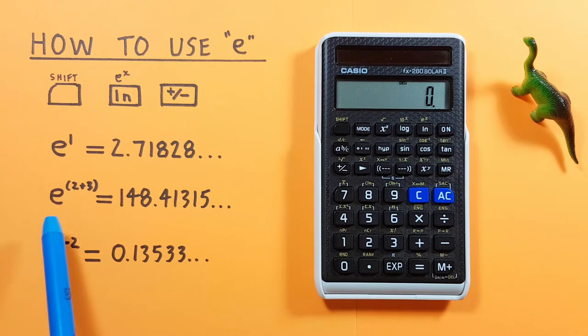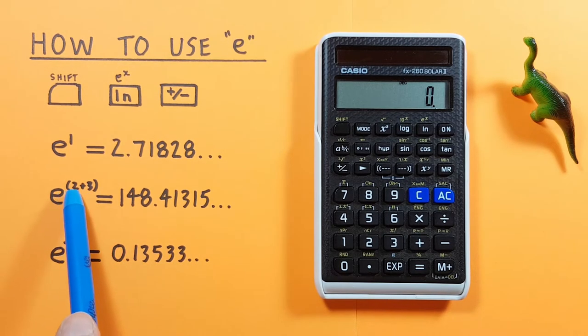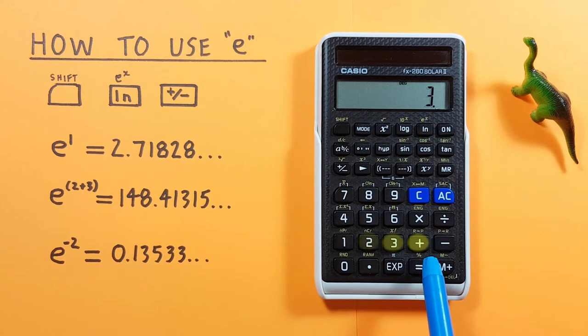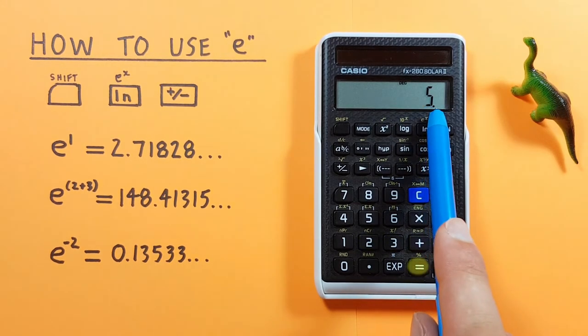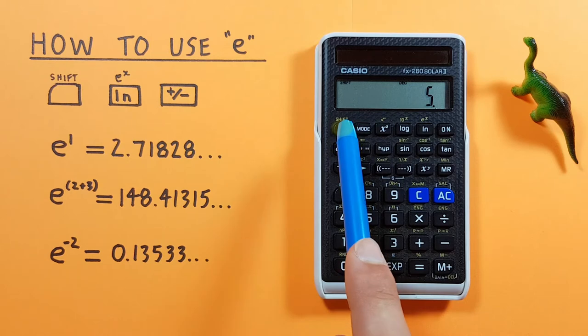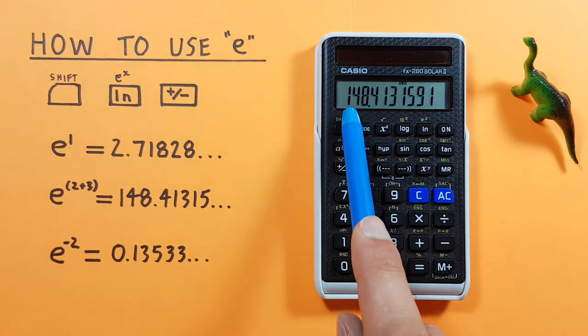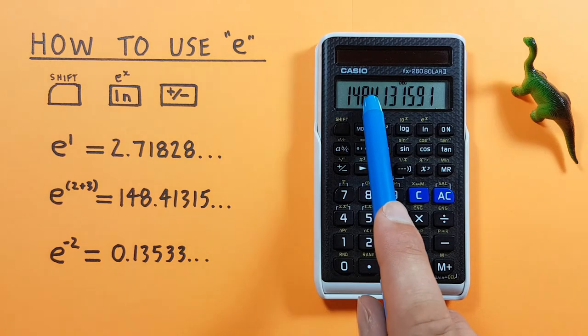If we have a more complex exponent, like say e to the power of 2 plus 3, we first enter the exponent on our calculator. So we go 2 plus 3 equals, there's our result, and then we go shift ln, and see we get a result of 148.41315 etc.